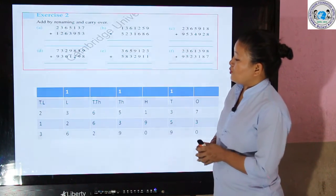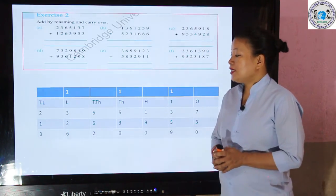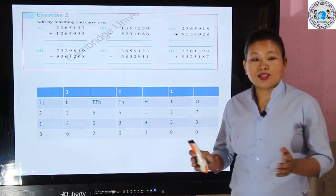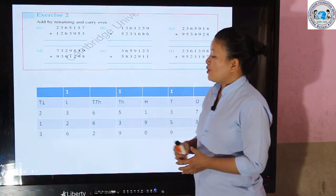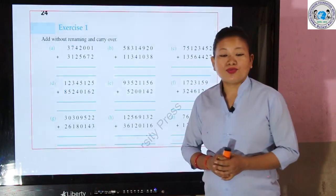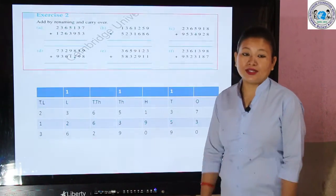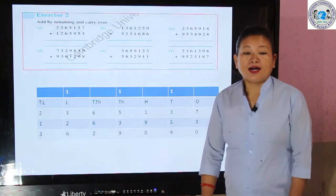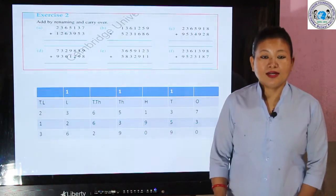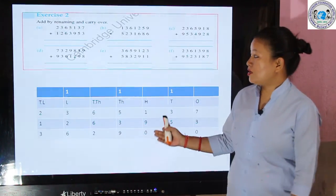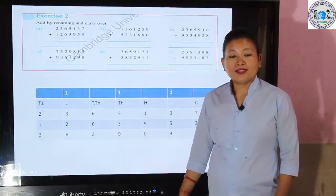We add 1, 3, and 2 in the lakhs column — the sum is 6. Then the next column: 2 and 1 is 3. We have completed this number, and in the same pattern you can solve the other questions as well.